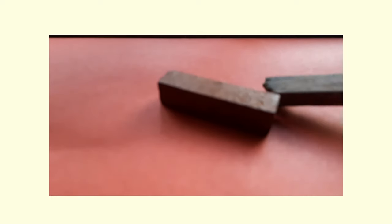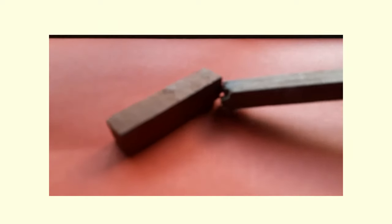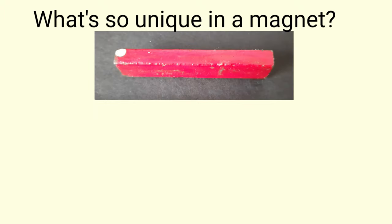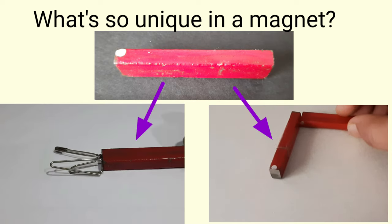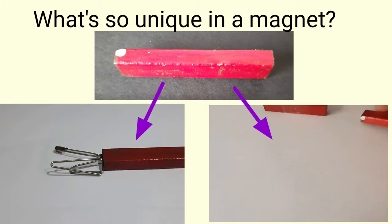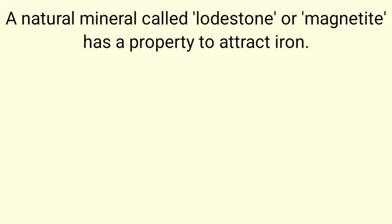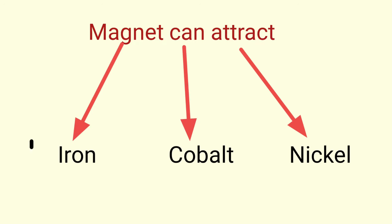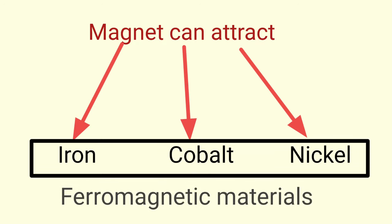Now, have you ever seen a wooden piece attracting another wooden piece or a ball attracting another ball? No. Then, what's so unique in a magnet that it can attract metals like iron or another magnet? Let's learn about it. A natural mineral called loadstone or magnetite has a property to attract iron. It's a natural magnet. This natural magnet is an oxide of iron. Magnet can attract other metals also like cobalt and nickel. Such materials are called ferromagnetic materials.